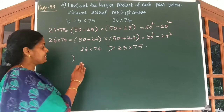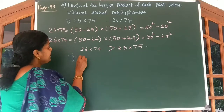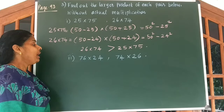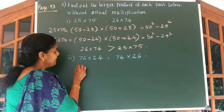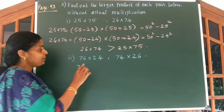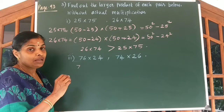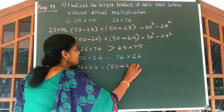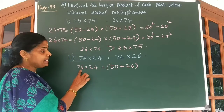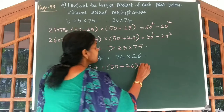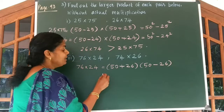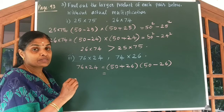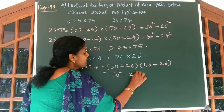Look at the second part of the question: 76 into 24 and 74 into 26. Now 76 can be written as 50 plus 26, and 24 can be written as 50 minus 26. So 76 into 24 equals 50 plus 26 into 50 minus 26, which is of the form (A plus B) into (A minus B), giving A square minus B square. So we get 50 square minus 26 square.